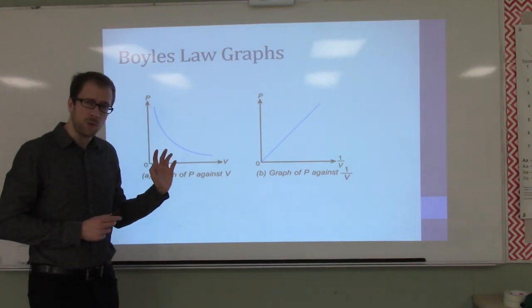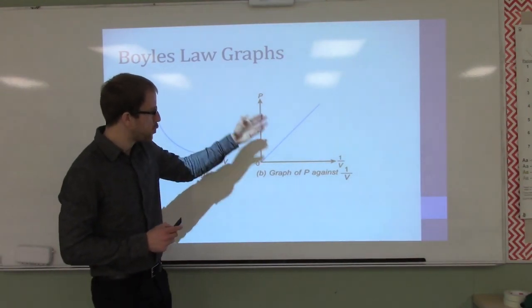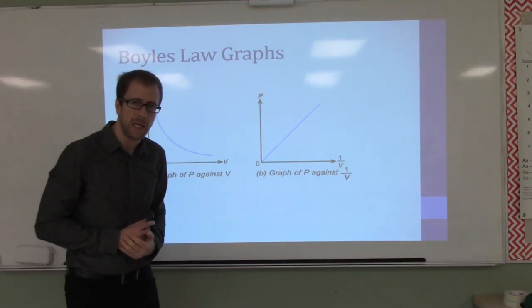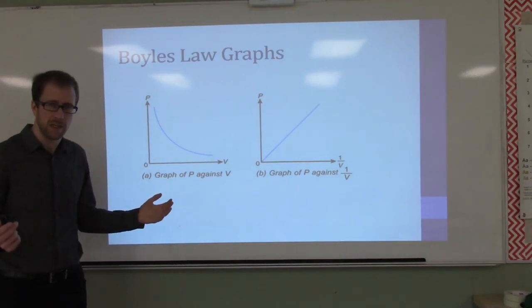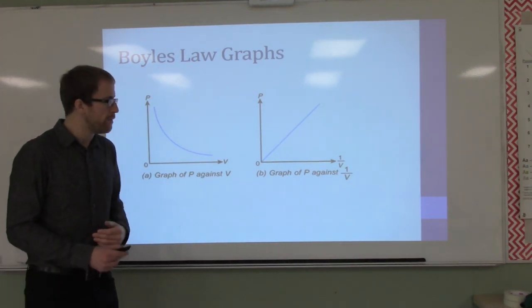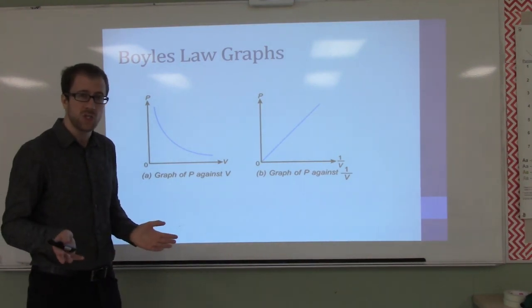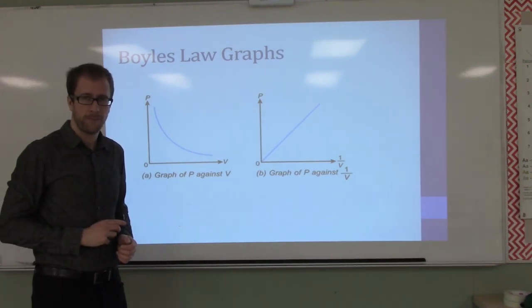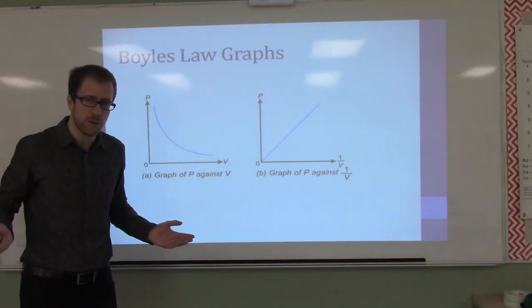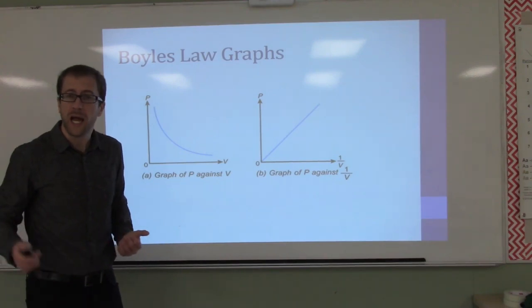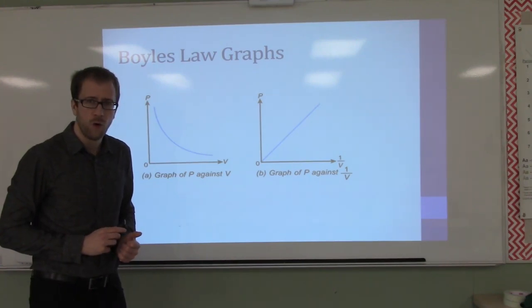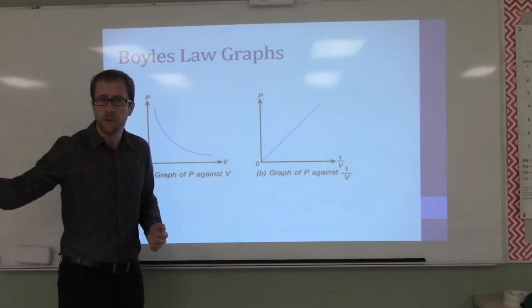If you plot the relationship of pressure to one over volume, you find that you get a straight line, which means they are inversely proportional completely. So what would happen if you double the pressure? It's going to half the volume. What happens if we triple the pressure? Your volume is now going to be one-third of what it was.